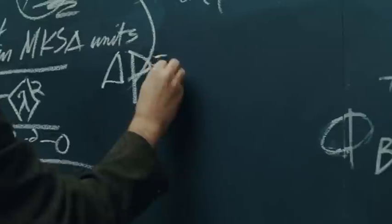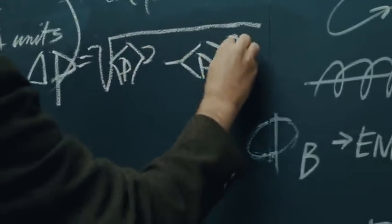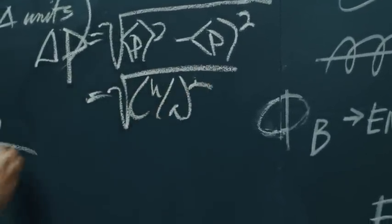the uncertainty in p is equal to the square root of bracket p squared minus bracket p squared, which also equals the square root of h over a squared, which lets us delta x,